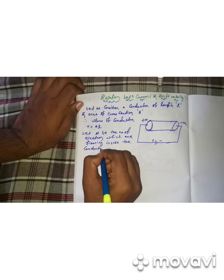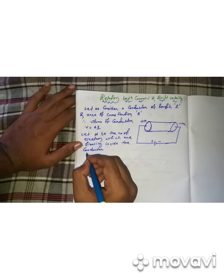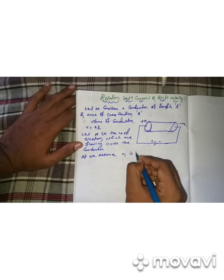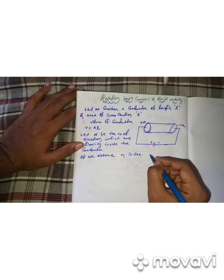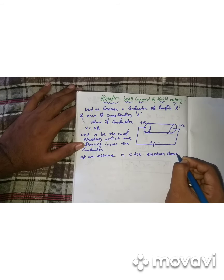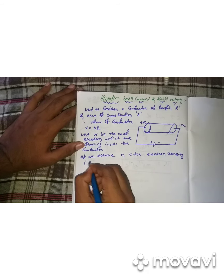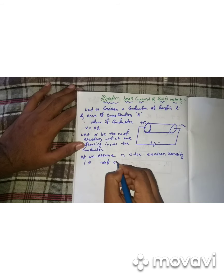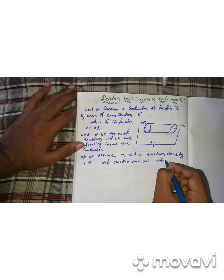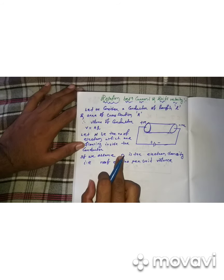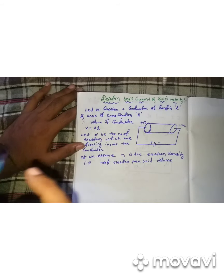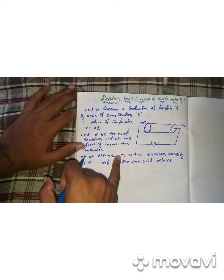Let N be the total number of electrons flowing inside the conductor. If we assume small n is the electron density, that means the number of electrons per unit volume.